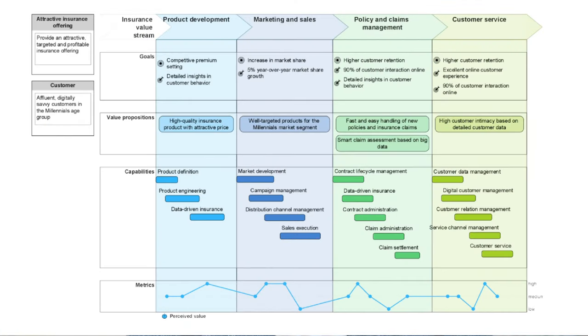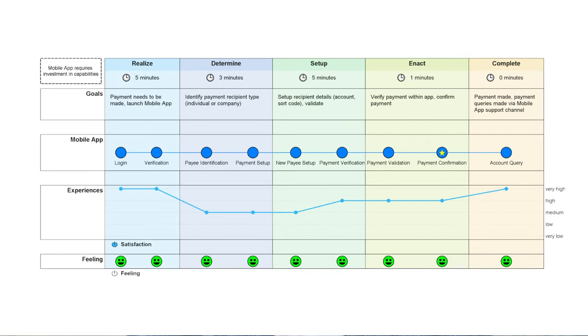You can think of business outcome journey maps that visualize the overall value creation and value streams of the enterprise and the capabilities needed to support those. Of course, we also have customer journey maps that let you design great customer experiences and are a starting point for optimizing the underlying business processes.